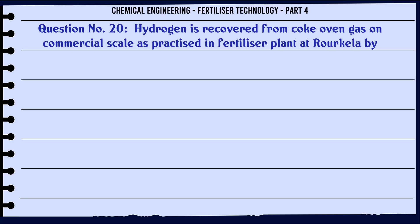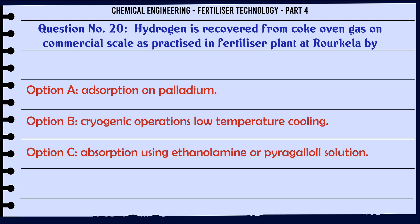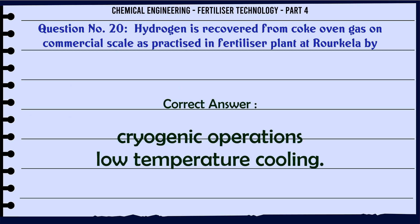Hydrogen is recovered from coke oven gas on commercial scale as practiced in fertilizer plant at Rourkela by: a. absorption on palladium, b. cryogenic operations (low temperature cooling), c. absorption using ethanolamine or pyrogallol solution, d. none of these. The correct answer is: cryogenic operations (low temperature cooling).